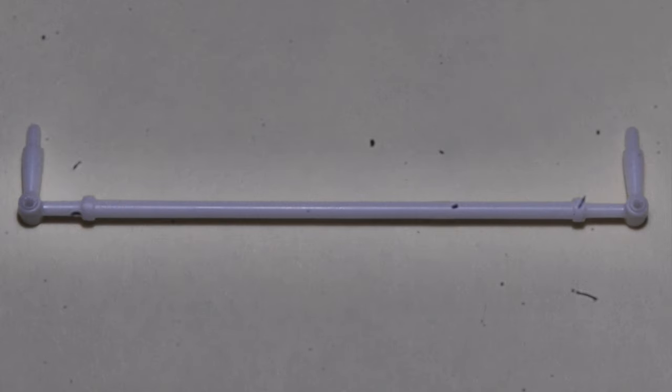Next item we'll work on is the tie rod. This is the stock snap kit part, and what I've done here is drilled out the tie rod ends using a 1/32nd diameter drill.